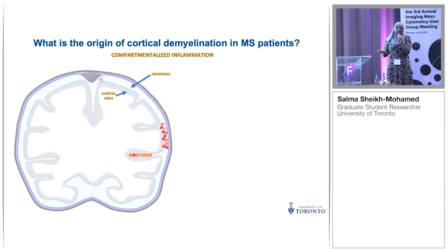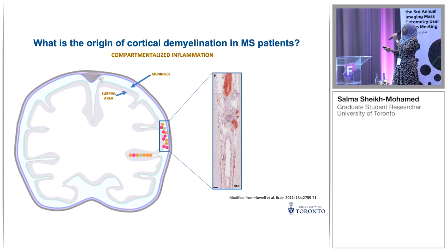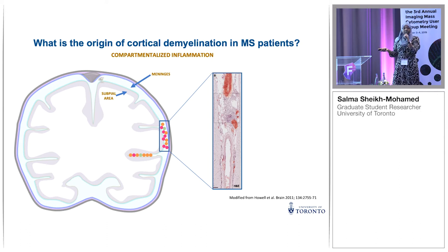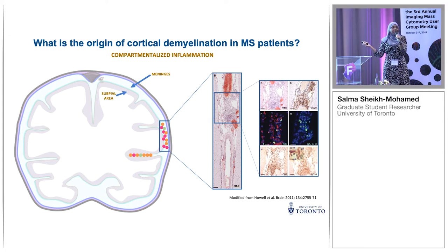One theory for what causes these grey matter lesions is that the meninges are involved. With MS we see general meningeal inflammation and also immune cell aggregates that actually look like tertiary lymphoid organs. The presence of these immune cell aggregates plus meningeal inflammation is closely associated with cortical demyelination — grey matter pathology. When we look closer at these aggregates with H&E and IF, we can see the presence of B cells, T cells, and plasma cells.